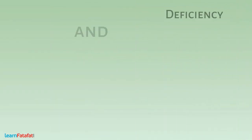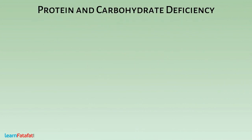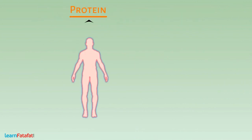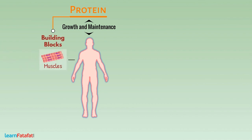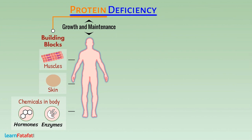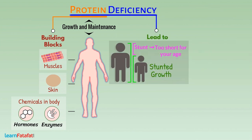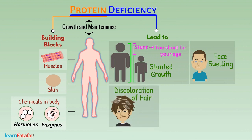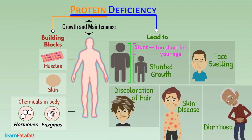Protein and Carbohydrate Deficiency. Our body needs proteins for growth and maintenance. These are the building blocks of muscles, skin, and chemicals in the body such as hormones and enzymes. Deficiency of proteins leads to stunted growth, face swelling, discoloration of the hair, different skin diseases, and diarrhea.